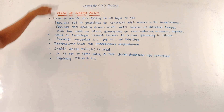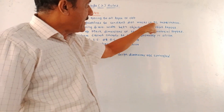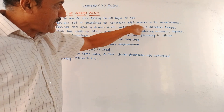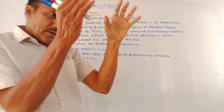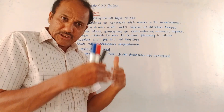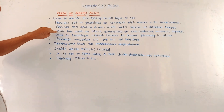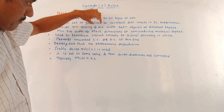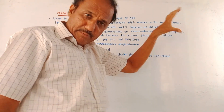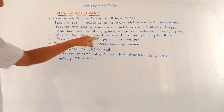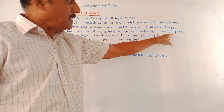Design rules provide a set of guidelines to construct different masks in the IC fabrication process. They provide minimum spacing and minimum width between objects of different layers. These rules provide the required spacing and required width, especially the minimum line width (MLW), which is used for mask dimensions of semiconductor material layers.